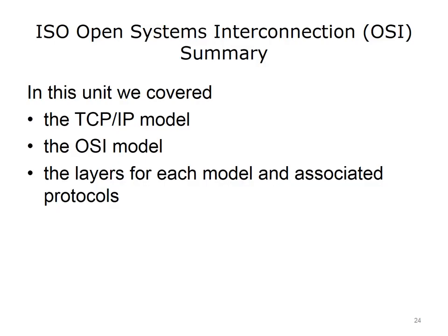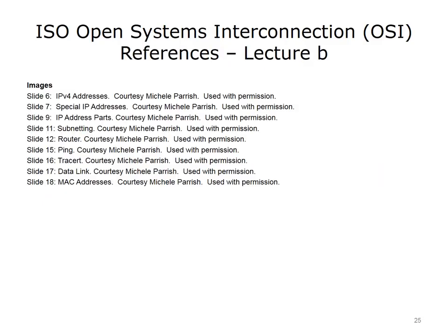The physical layer transforms bits into signals to be sent across the network media — this is the layer at which data is actually transmitted, commonly referred to as PHY. At the physical layer, we have specifications for hardware like network cables, connectors, and wireless radio transceivers. This layer is also responsible for data encoding: taking the data, zeros and ones, and turning it into an electrical, optical, or wireless signal transmitted over the media. Popular encoding methods are non-return-to-zero and Manchester. Topologies describe how network devices are connected to each other, and the physical layer is concerned with the type of media used.